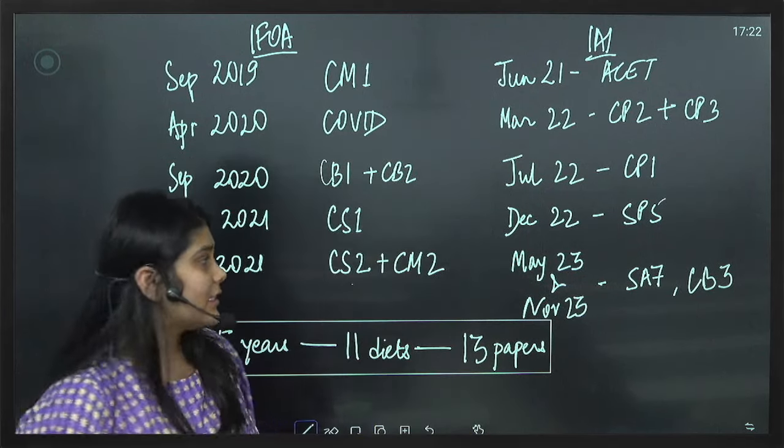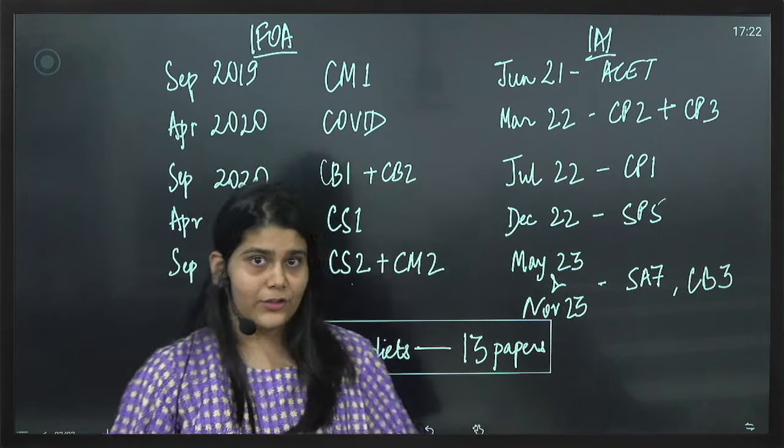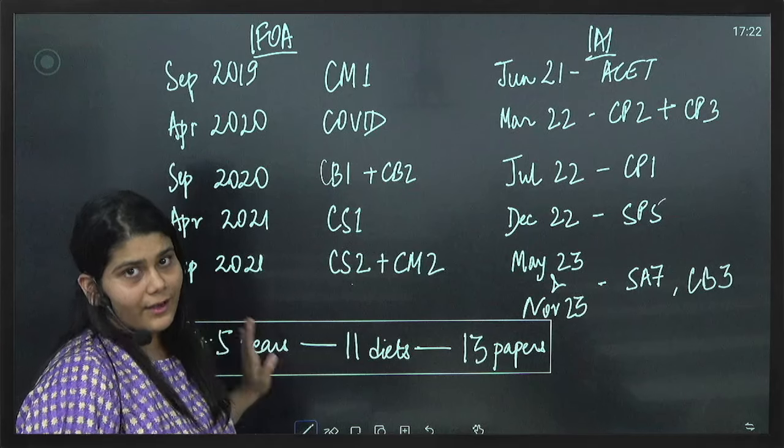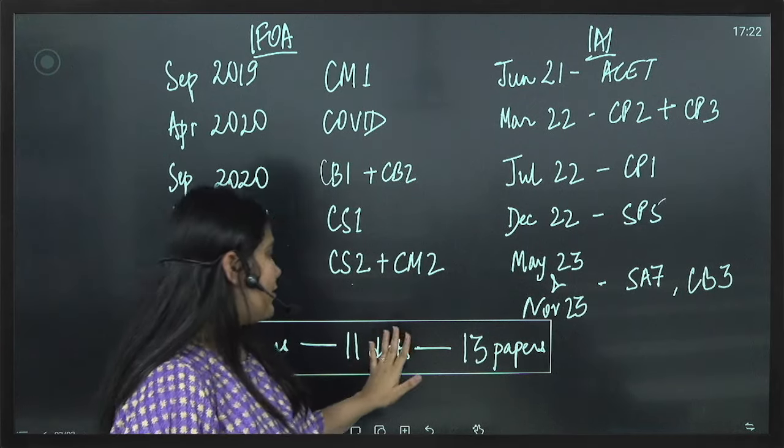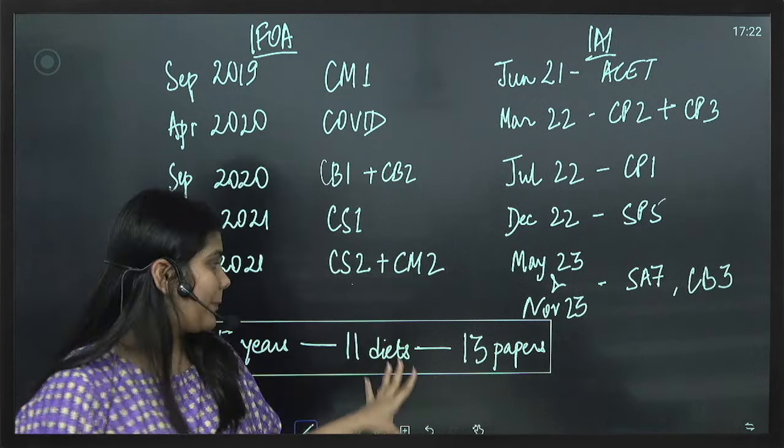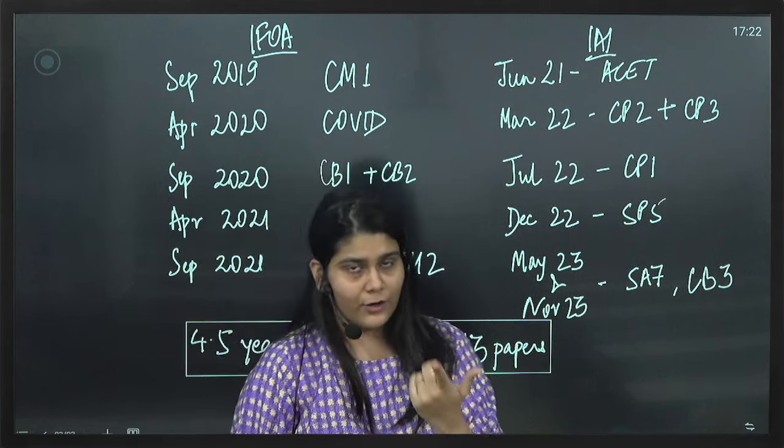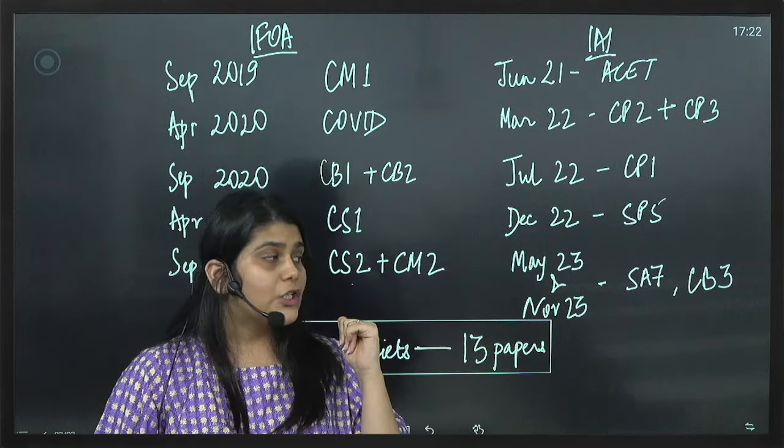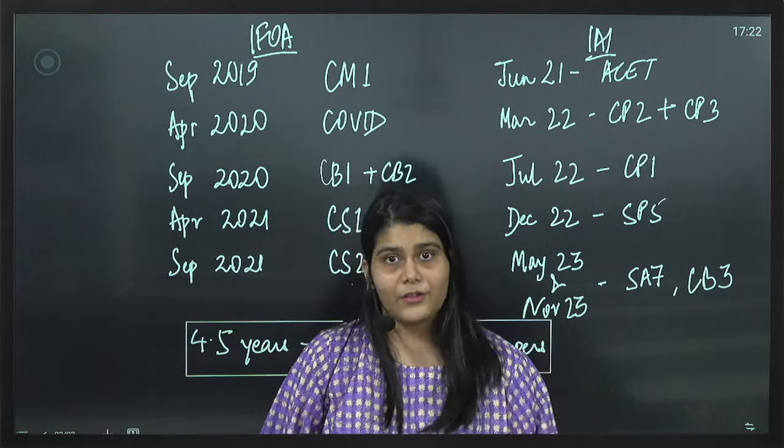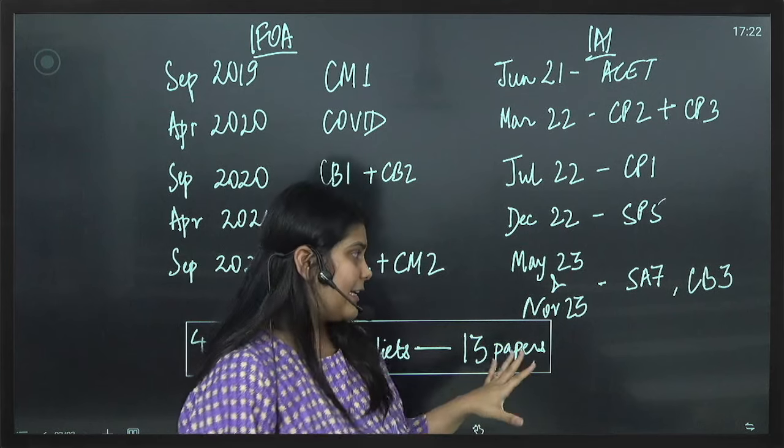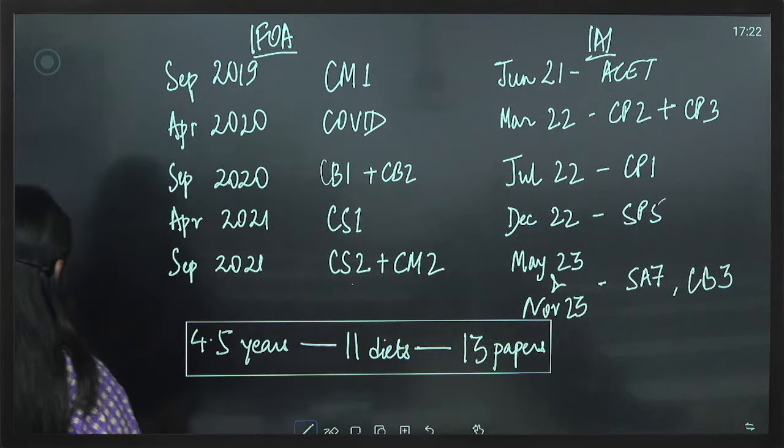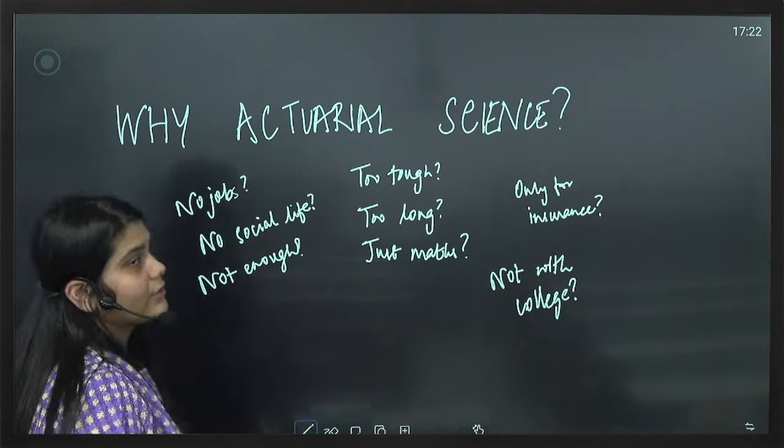As you can see, from September 2019 to November 2023, it was around about four and a half years. Together around 11 diets, together 11 diets and 13 papers. One paper was exempt because of my chartered accountancy. So now let's see what are the common myths about this course.